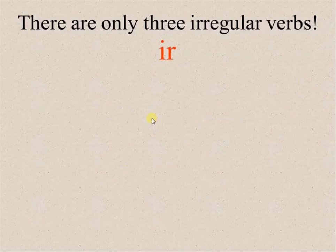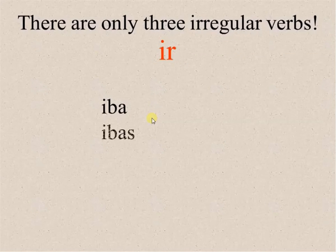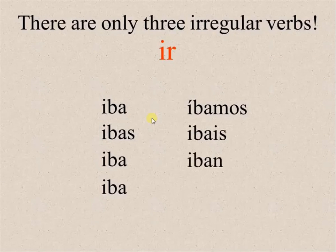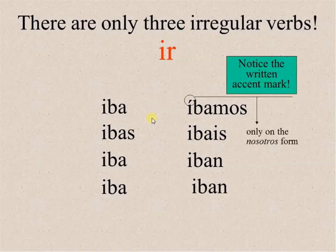The second irregular verb is the verb ir: yo iba, tú ibas, él o ella iba, usted iba, nosotros íbamos, vosotros ibais, ellos/ellas iban, ustedes iban. Again, accent mark over the nosotros form.